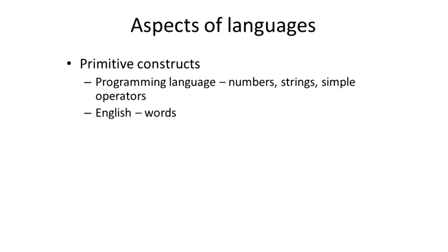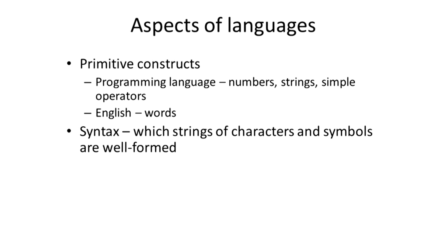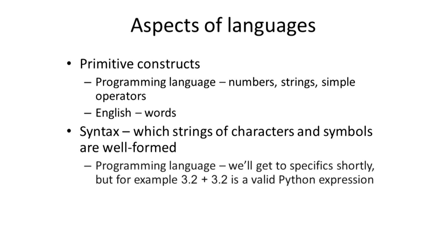When we go to put primitives together, we will talk about the syntax of the language, which tells us which strings of characters and symbols constitute well-formed combinations. In programming languages, a number followed by an operator followed by a number is a valid Python expression — it says to apply that operator to those two numbers to do the right arithmetic.